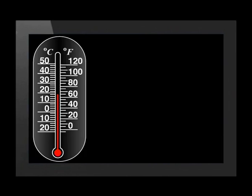Temperature is measured with a thermometer. This is usually a small tube that contains mercury. When it gets hot, the mercury expands, moving up the tube. There are markings on the tube to show what temperature it is when the mercury reaches a specific height.